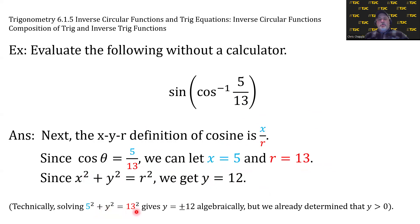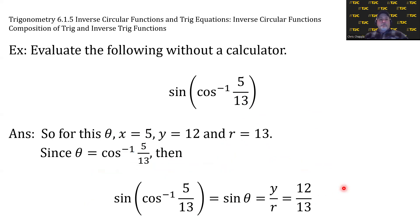It is worth mentioning that technically, when you solve 5 squared plus y squared equals 13 squared, that gives you y equals plus or minus 12 algebraically. Well, we already determined that y was greater than zero because we're in quadrant 1. So, for this theta, we can say x equals 5, y equals 12, and r equals 13.